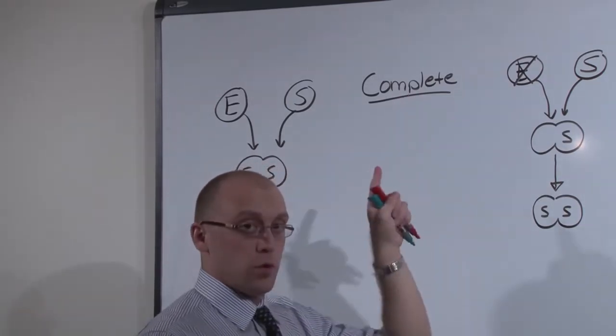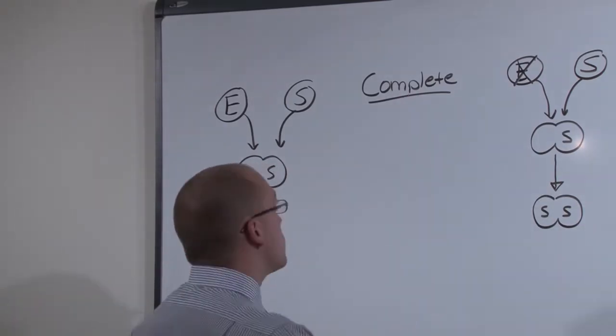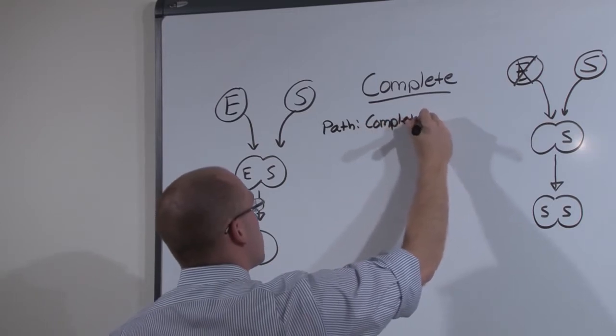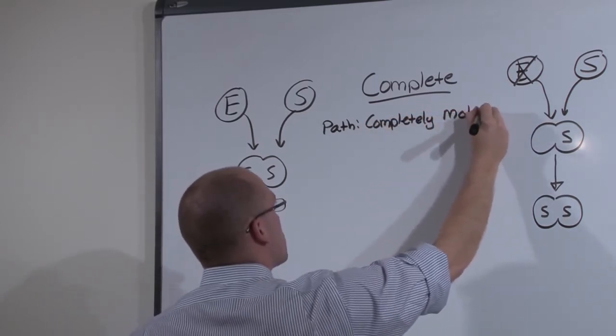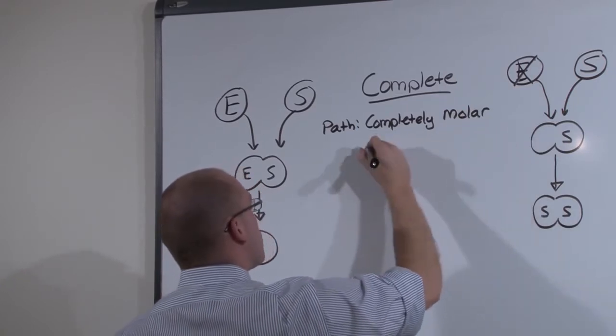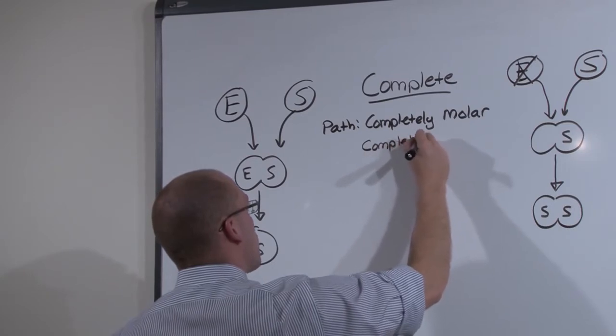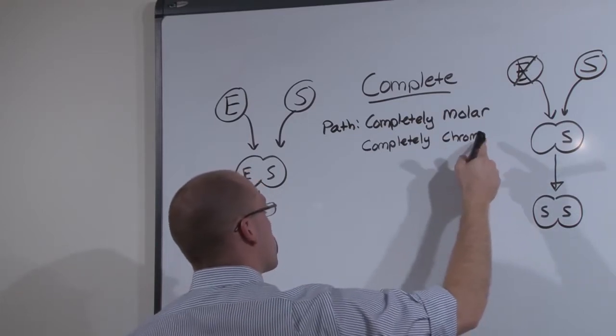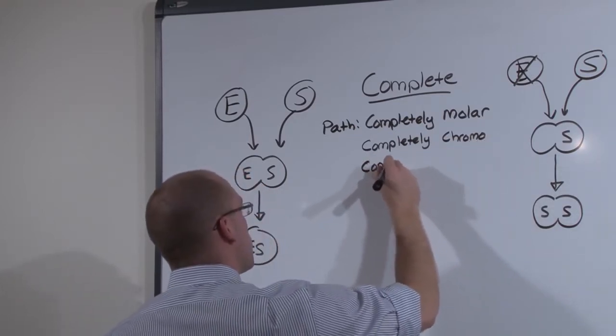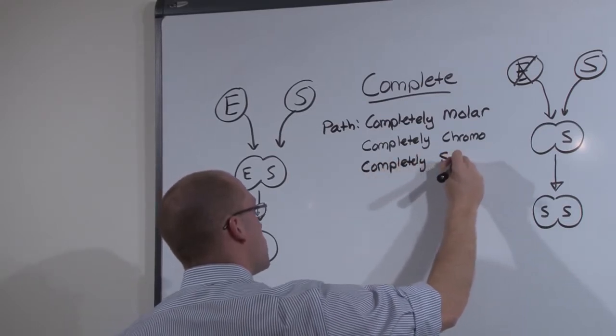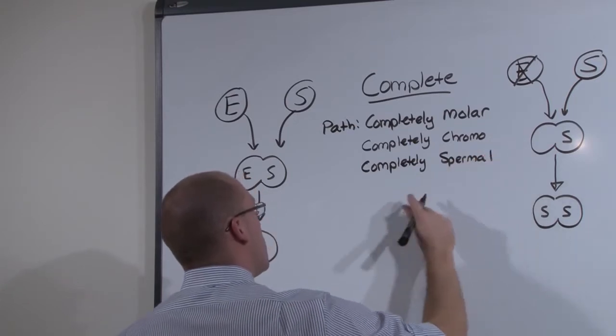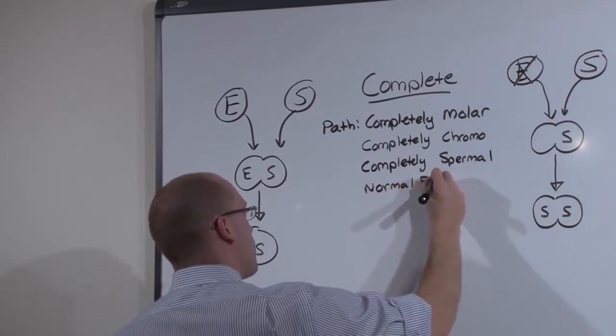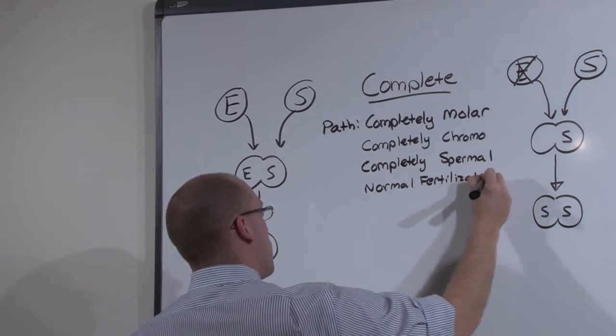A complete mole is complete. It is completely molar. What that means is there are no fetal parts. It's all mole. It has a complete set of chromosomes. It is completely chromosomal. That is, it has 46 chromosomes. It is also completely spermal. That is, all the genetic material is from the sperm. And it is a result of a normal fertilization but a broken egg.